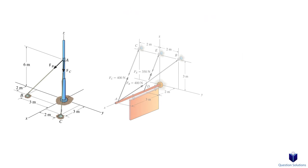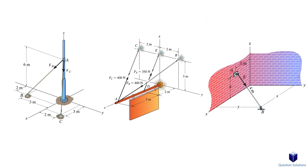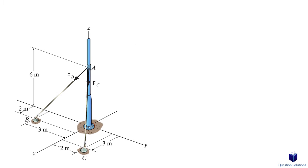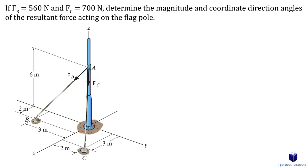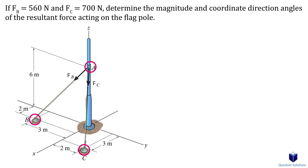Let's move on to some examples. We need to find the resultant force and the coordinate direction angles. We see that this is a force directed along a line, since both forces start at A — one goes to point B and another goes to point C. To find the answers, we need to express each force in Cartesian form. The first step is to write down the locations of all the points of interest.